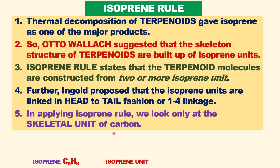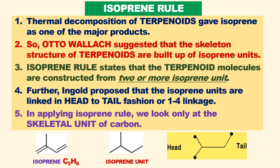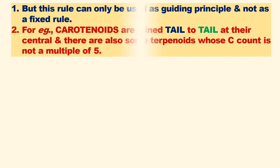The isoprene units are connected in a head-to-tail manner. When applying the Isoprene Rule, we only look at the skeletal unit, not the double bonds. This is the head portion and this is the tail — the same applies to each isoprene unit.